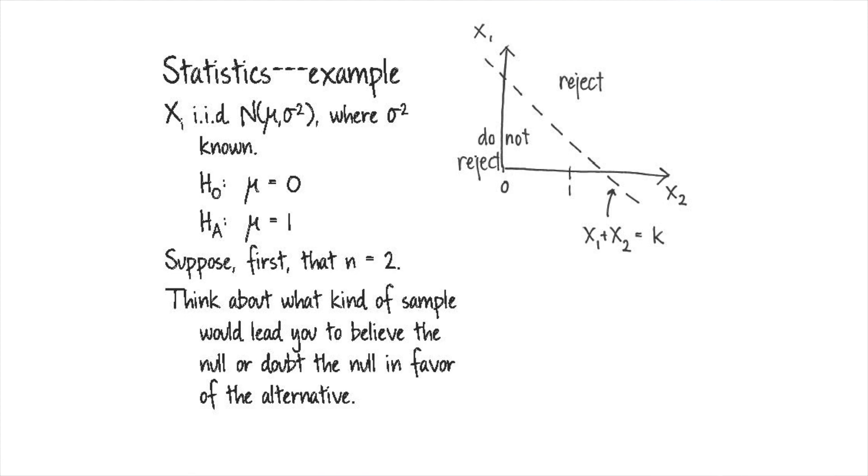So we'll get back to how to choose K in a second. That's sort of an important piece. But for now, let's just say that there's some constant K, and that's going to divide where our sample lives into two regions.